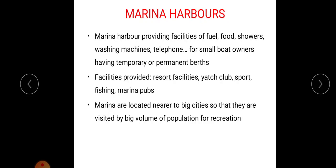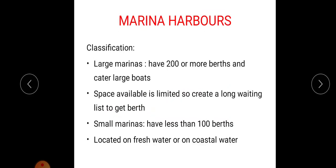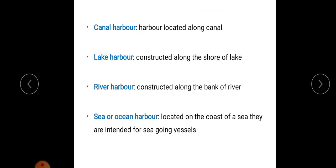Next is marina harbor. Marina harbors provide facilities of fuel, food, showers, washing machines, and telephones for small boat owners having temporary or permanent berths. The main facilities provided are resort facilities, yards, clubs, sports, fishing, and marina pubs. These are located nearer to big cities so that they are visited by a large volume of population for recreation. Marina harbors are classified into two types: large marina, which has 200 or more berths and caters to large boats but has limited space creating long waiting lists, and small marina, which has less than 100 berths and is located on freshwater or coastal water.